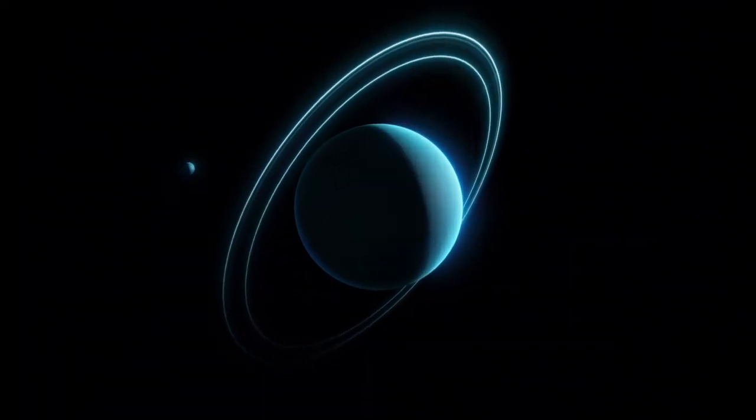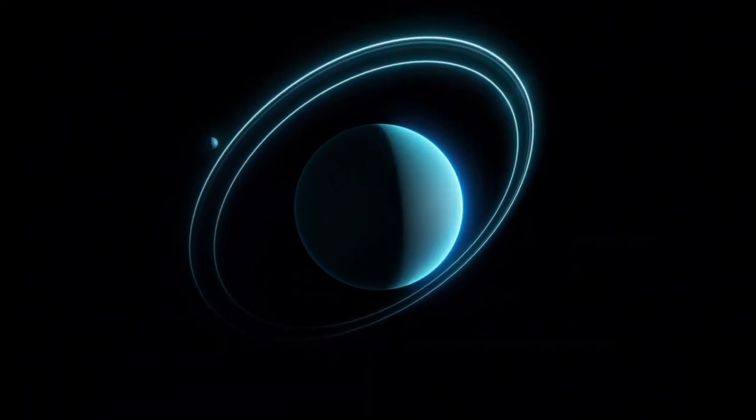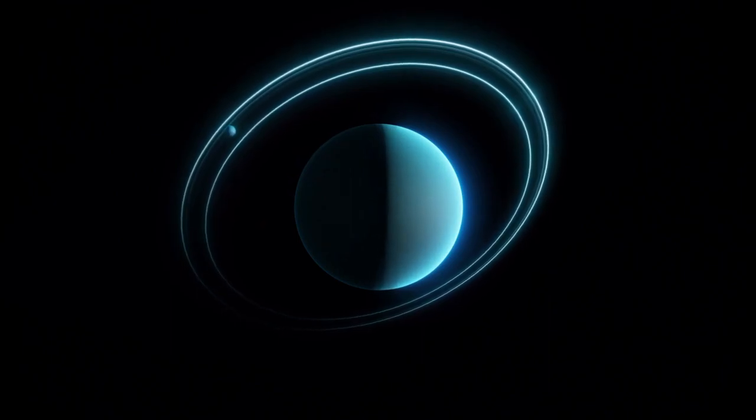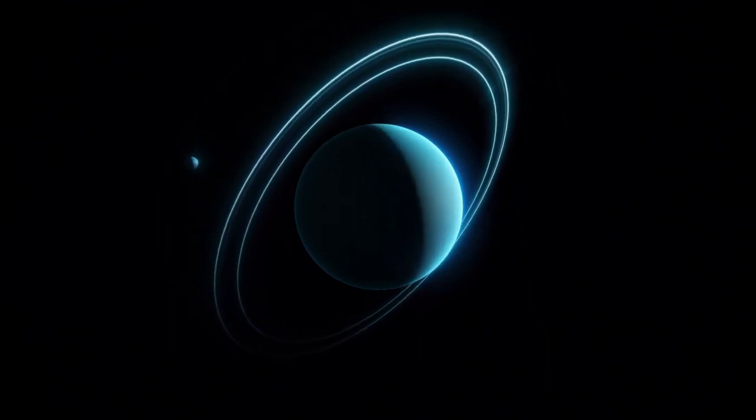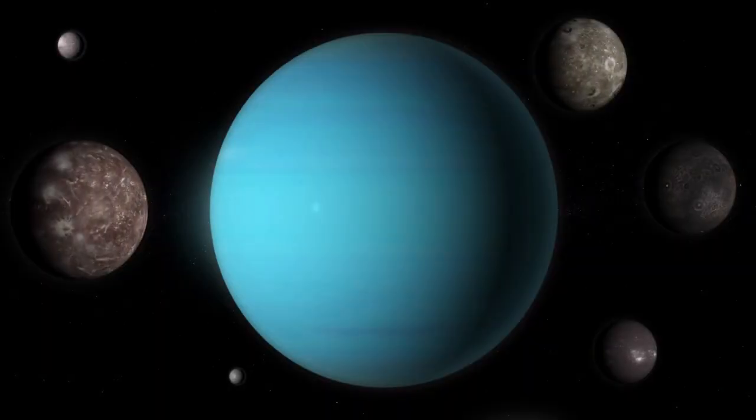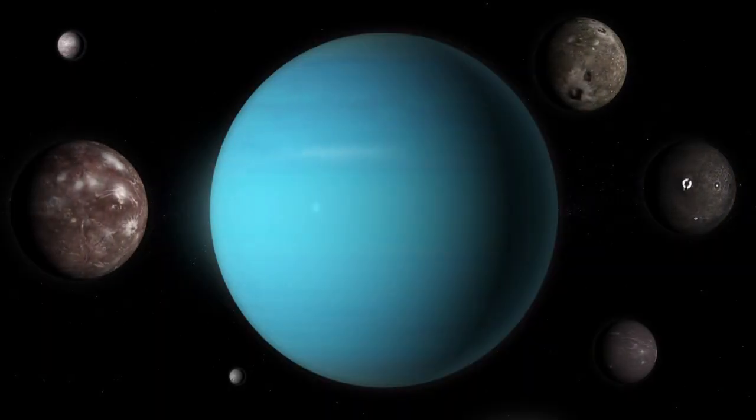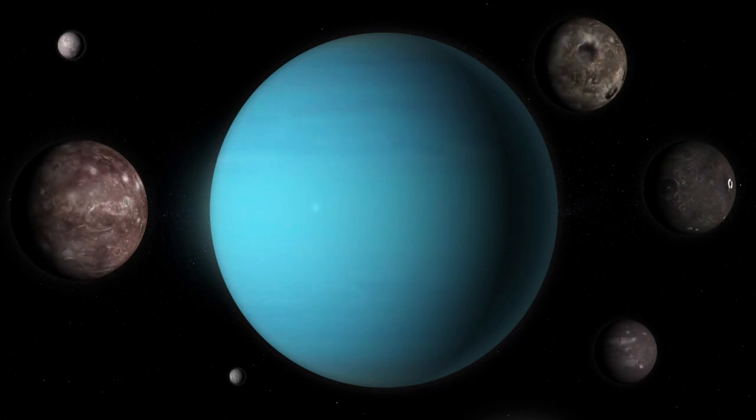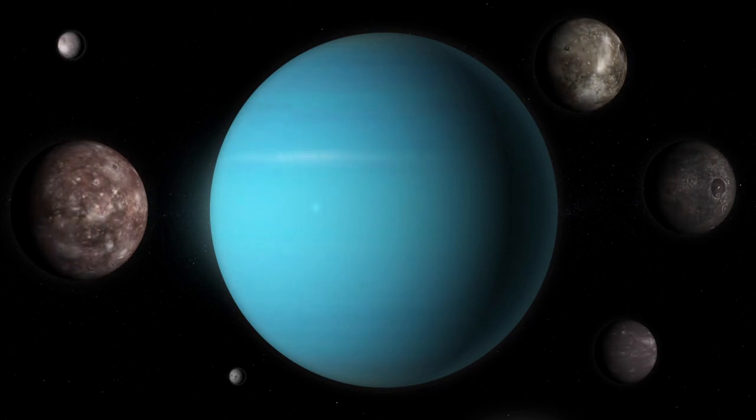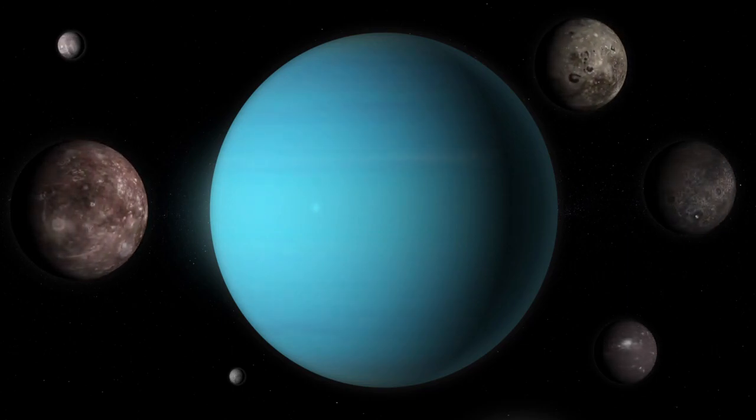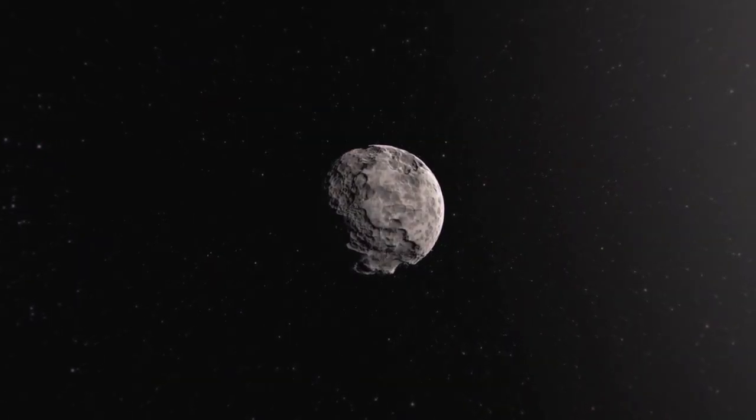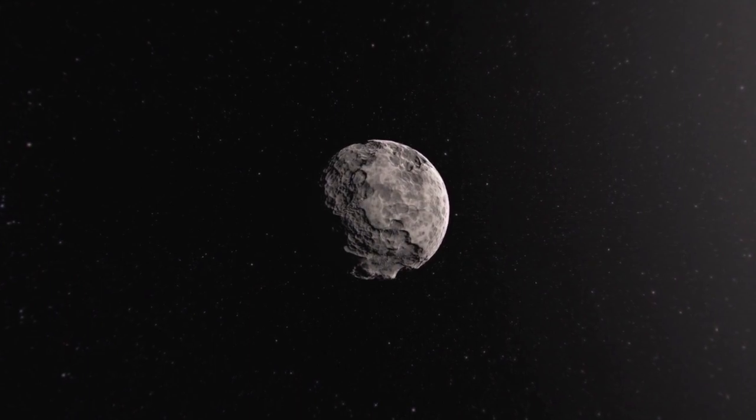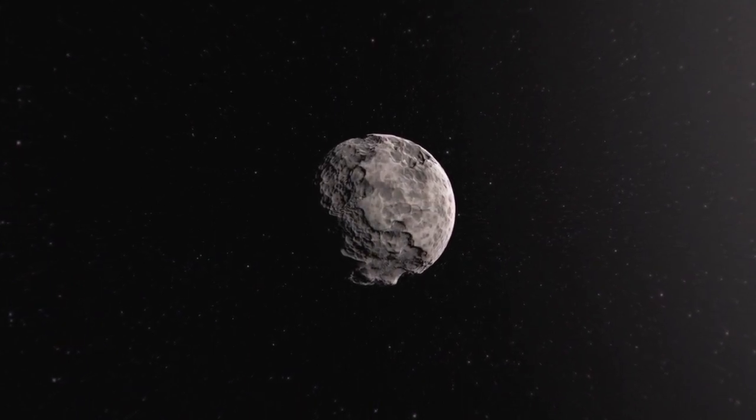Uranus is an ice giant and is the seventh planet from the sun. It is tilted on its side, and its moons and rings orbit around its equator. Uranus' moons are small and icy, with Miranda being the most interesting due to its strange appearance and history of geological activity. It has a highly varied terrain, with cliffs up to 12 times higher than those in the Grand Canyon.